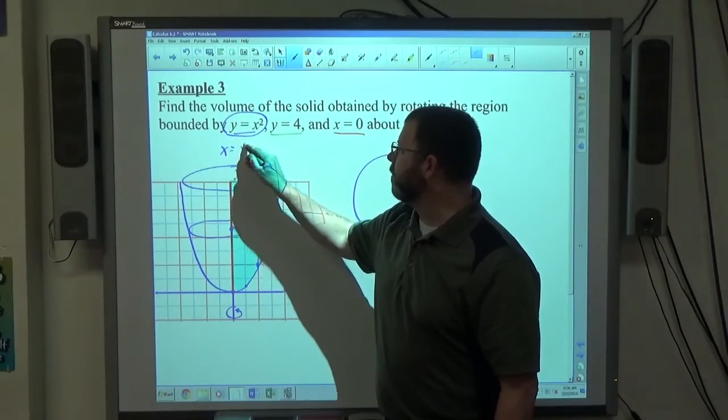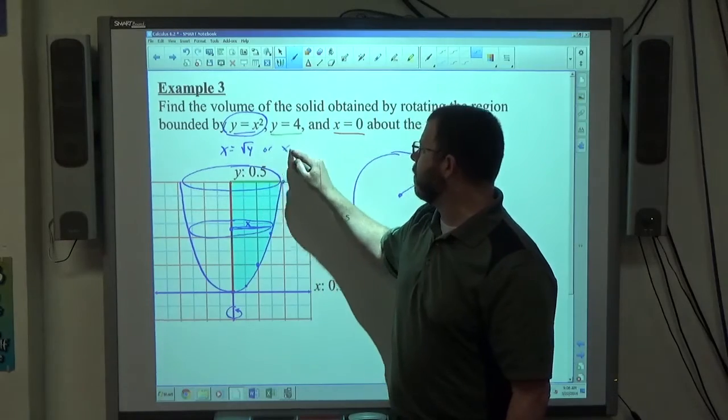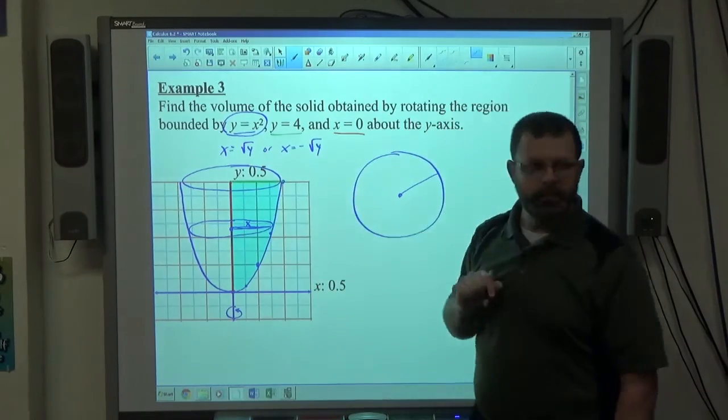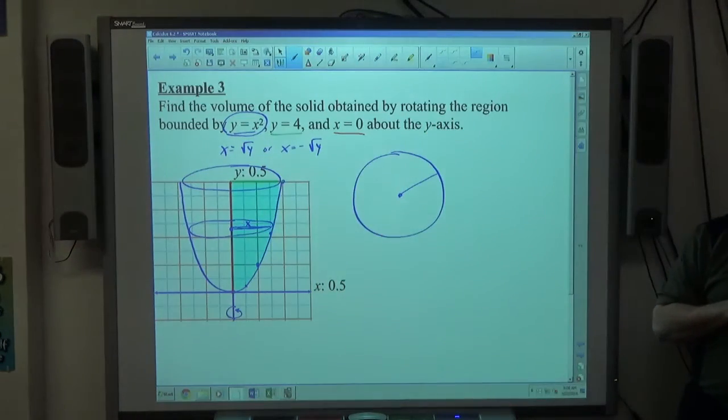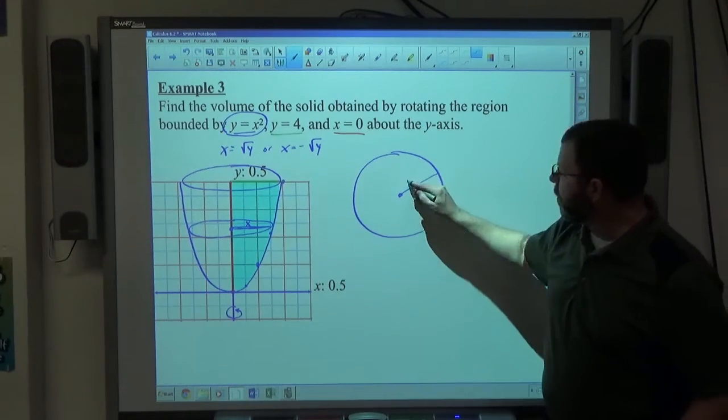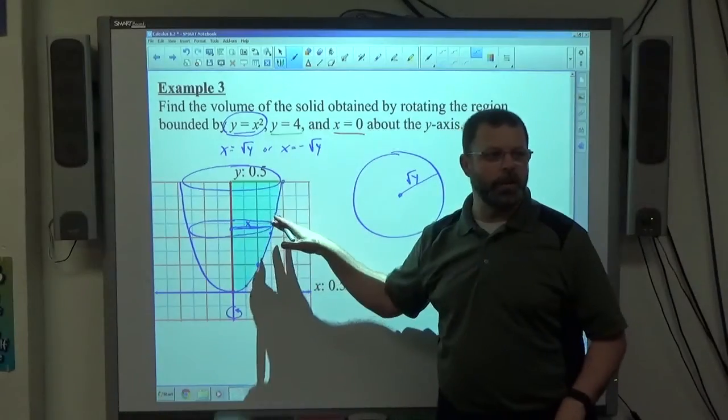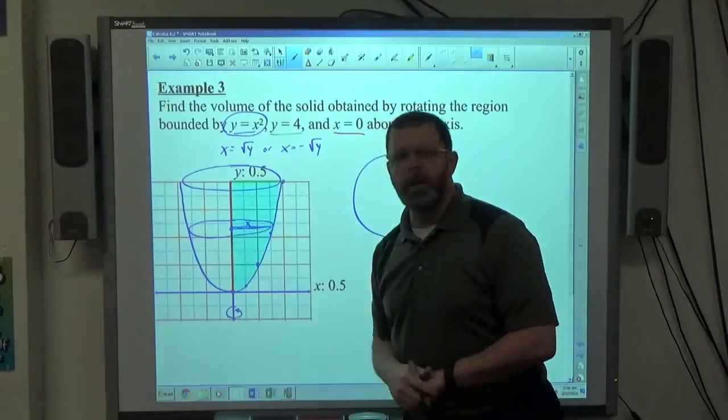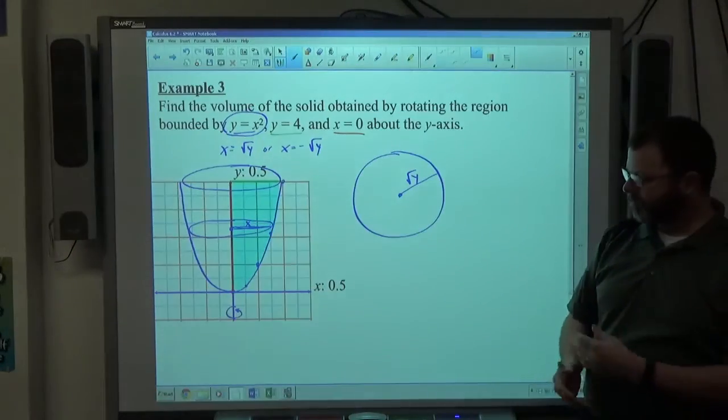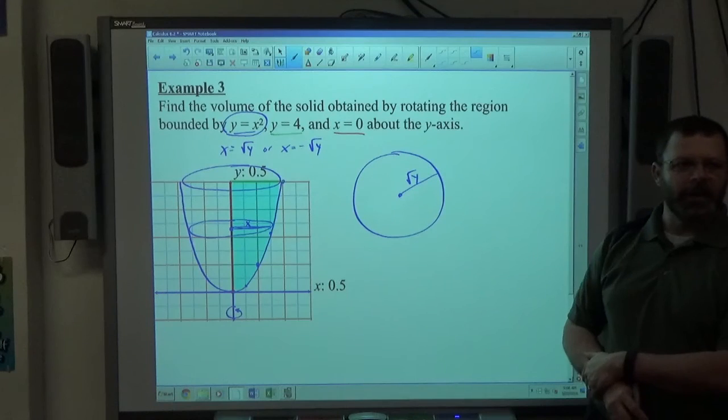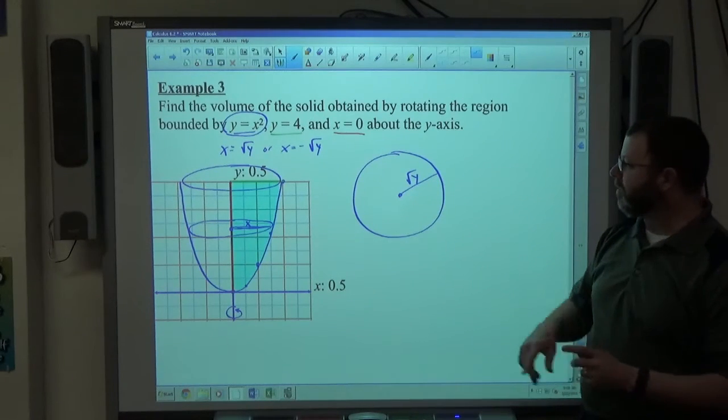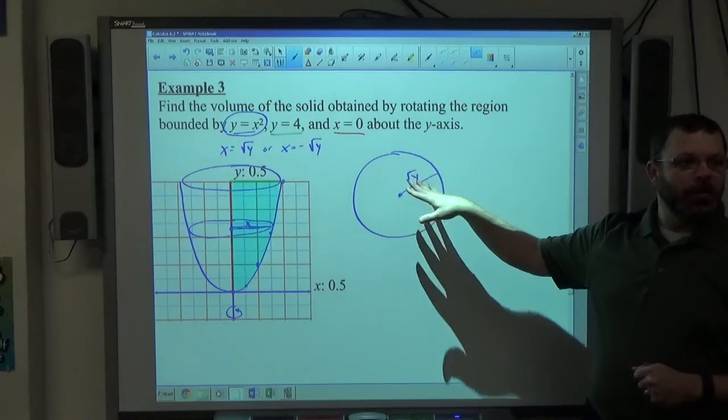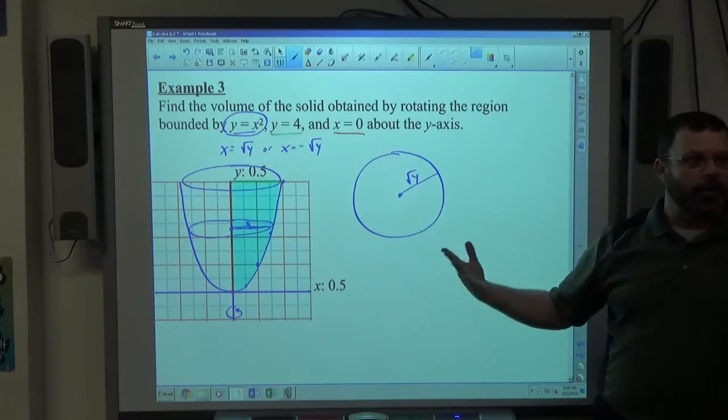If y equals x squared, that means x equals either positive the square root of y or x equals negative the square root of y. Take your pick which one it is, it doesn't matter. I'm going to go with positive the square root of y because we're taking the region in the first quadrant. The negative square root of y goes that way. Since we picked the region in that first quadrant, we're going to go with positive. When I get the area of this, I'm going to square that, so whether it was positive or negative, squaring it you're going to get a positive.